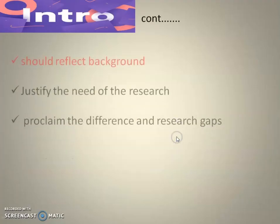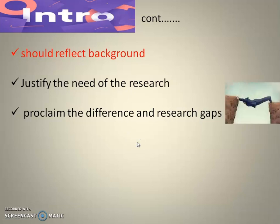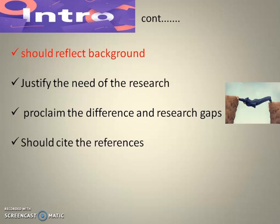Now let's discuss more about the introduction. Your introduction should always reflect the background — by background I mean the variables you have undertaken for your study should be clearly explained. You also need to justify the research — why you are doing this research should be justified in your introduction. Another thing you have to do is proclaim the differences and research gaps. These research gaps are identified when you do extensive literature review; you find the lacunas and where the differences are, and on the basis of literature review you write your title and introduction very well.